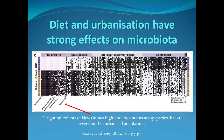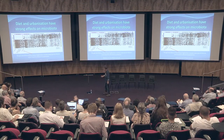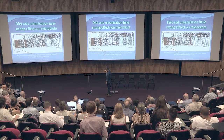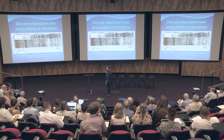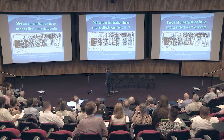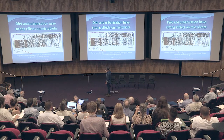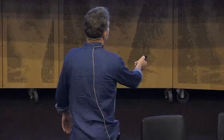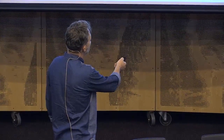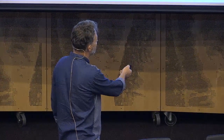Another study comparing two Papua New Guinea tribes with modern US populations found organisms present in every single individual in the Papua New Guinea hunter-gatherer society that are completely extinct in modern civilised populations - they're just not there at all. The only things present in the US population but not in Papua New Guinea are things like Pseudomonas and Clostridium, which are pathogenic and not good for us.